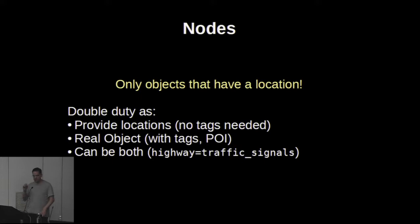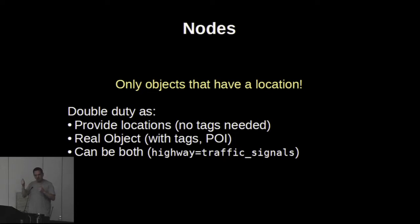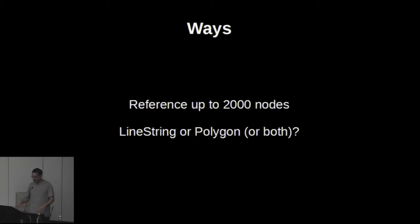On the other hand, nodes can be real objects — what we call a point of interest. And they can be both, which makes it even stranger. So if you have a node on a road that marks a traffic light, that node has double duty as a location on the way and also describes the traffic light there, while also being part of the geometry of the way. We have ways that can reference up to 2,000 nodes, and a way can be a line, or when closed, it can be a line or a polygon.